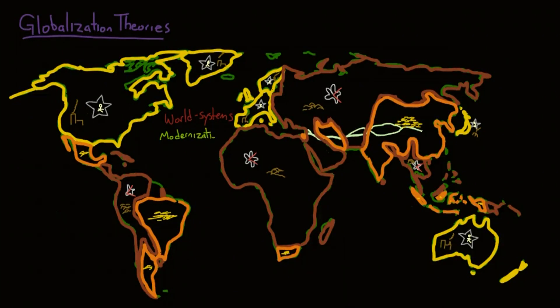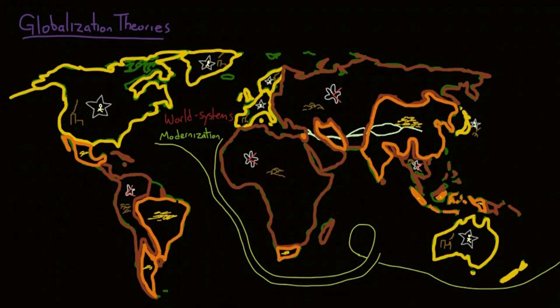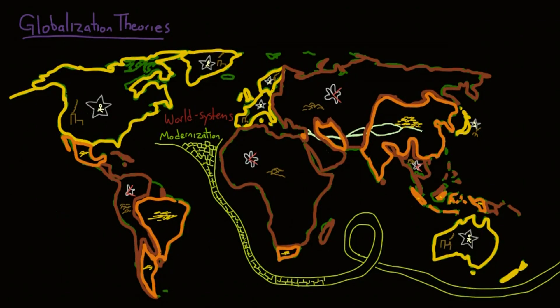Then we have modernization theory, which proposes that all countries follow a similar path of development from a traditional to a modern society. It assumes that, with some help, traditional countries can develop into modern countries in the same way that today's modern countries developed in the first place. It looks at the internal social dynamics as the country adapts to new technologies, and the political and social changes that occur.